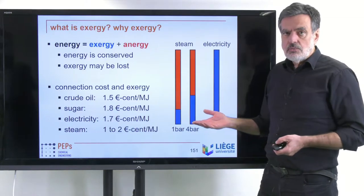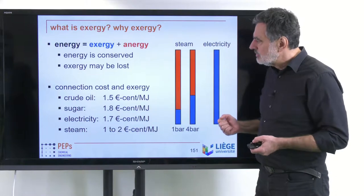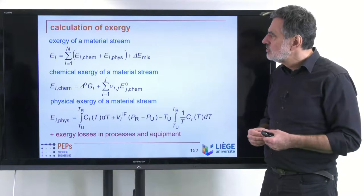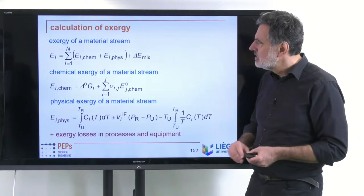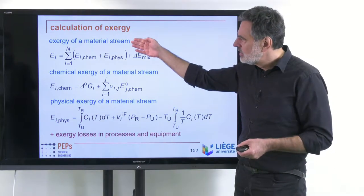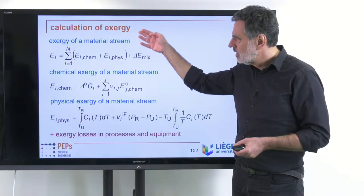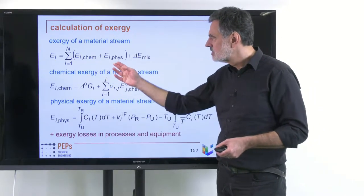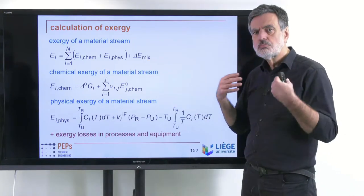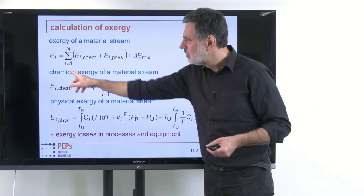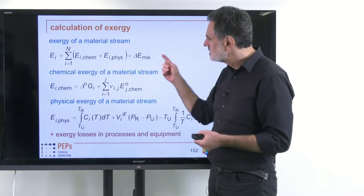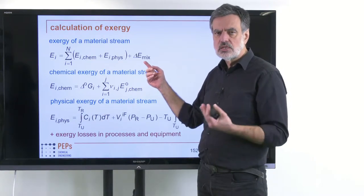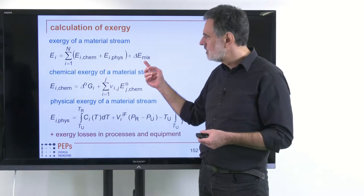Now I should elaborate a little more on what exergy actually means and how it is calculated. These are the equations used by Philipp Frenzel in his thesis and publications, and they relate preferably to the exergy of a material stream. That material stream has mainly three contributions: a chemical contribution, a physical contribution, and a contribution due to mixing of the different components. The mixing part relates to the entropy of mixing — a minor contribution.